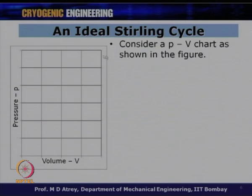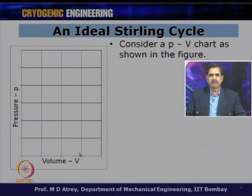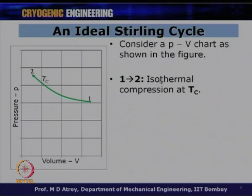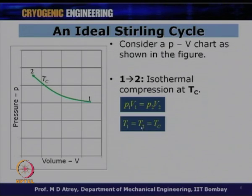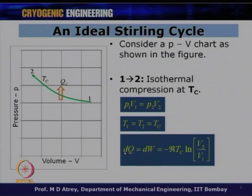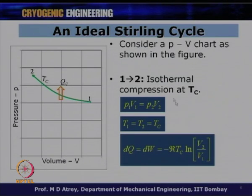The working of the Stirling cycle is shown on a PV diagram. Process 1–2 is isothermal compression at temperature Tc, where P₁V₁ = P₂V₂, T₁ = T₂ = Tc, and heat transfer equals work done: Qc = −RTc·ln(V₂/V₁).